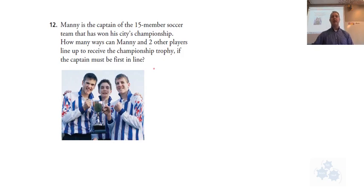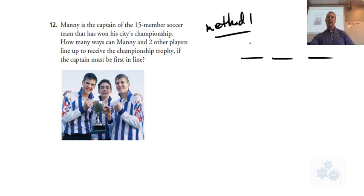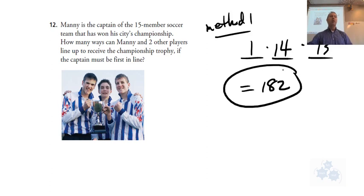So Manny's the captain of a 15-member soccer team that's won his city championship. How many ways can Manny and two other players line up to receive the championship trophy if the captain must be first in line? Two different ways you could look at this. Method 1, fundamental counting principle. I like this way. It's very straightforward. The captain has to be first in line. There's only one captain, so there's only one choice for the first in line. How many could line up behind the captain? 14, because there's 14 players left over. Now that two of them are placed in the lineup, how many are remaining for this third spot? 13. So we multiply these out, you get 182. So there's 182 different ways that we could do this.